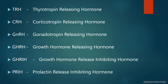The hypothalamus produces PRIH — Prolactin Release Inhibiting Hormone. When needed, PRIH stops the production of prolactin. This is the mechanism by which the hypothalamus controls prolactin hormone release from the anterior pituitary.